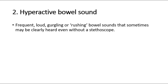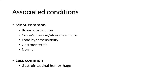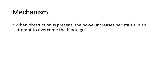The second type of abnormal sound is hyperactive bowel sound, where there are frequent, loud, gurgling, or rushing bowel sounds that sometimes may be clearly heard even without a stethoscope. This can be associated with bowel obstruction, Crohn's disease and ulcerative colitis, food hypersensitivity, gastroenteritis, and less commonly, gastrointestinal hemorrhage. For its mechanism, when obstruction is present, the bowel increases peristalsis in an attempt to overcome the blockage.